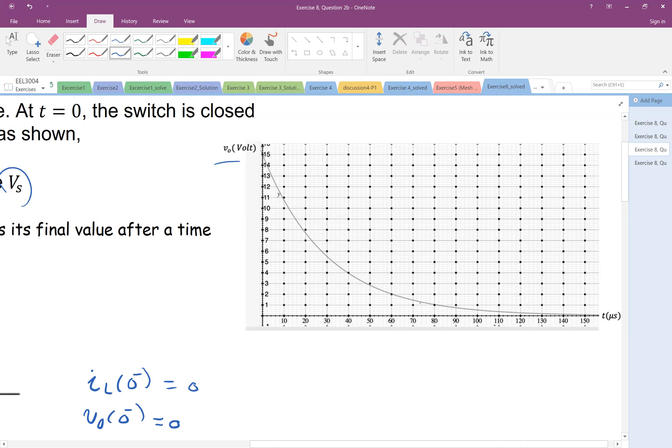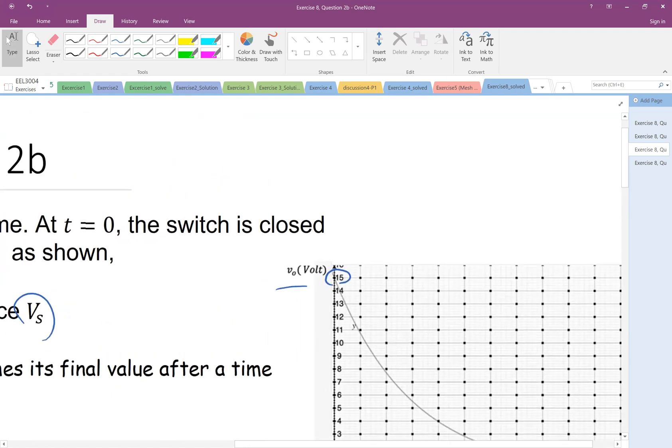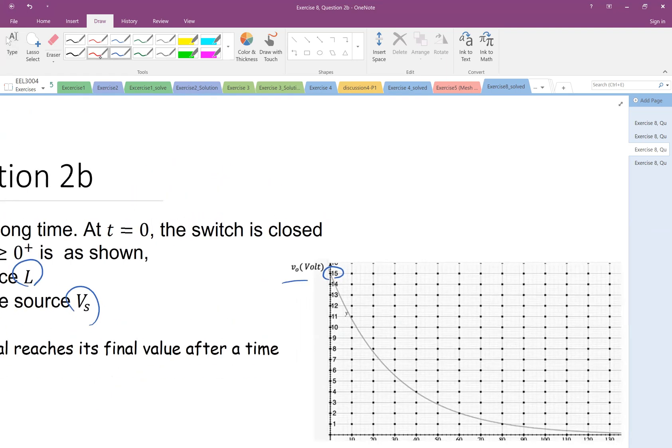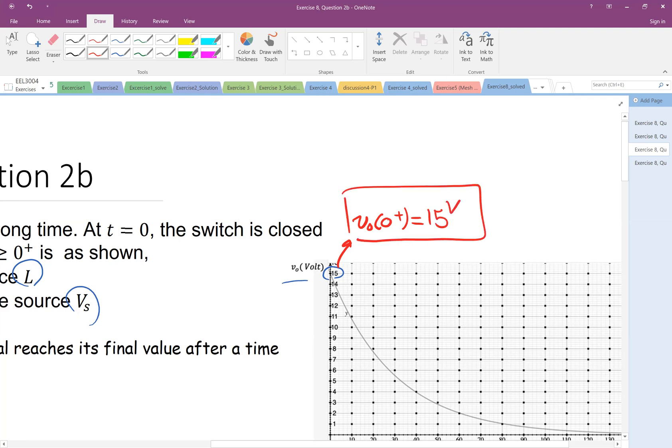First of all, this is V0. At t equal to zero, exactly here, the value is 50. Let me enlarge this. So from this graph, the information that I extract is that V0 at zero plus is 50 volts. This is one information that I can extract.